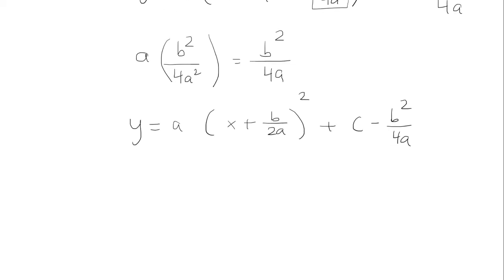Now this thing should factor as x plus b over 2a quantity squared plus c minus b squared over 4a. Okay, so we're almost done. And here's what we have to do.